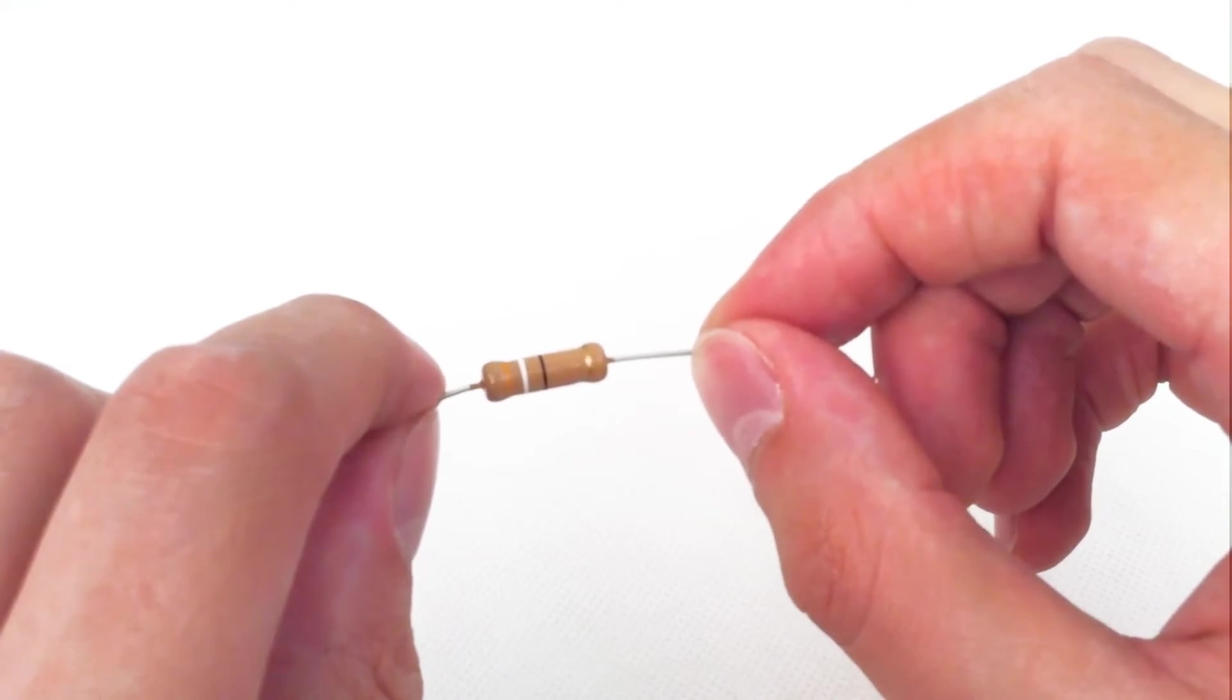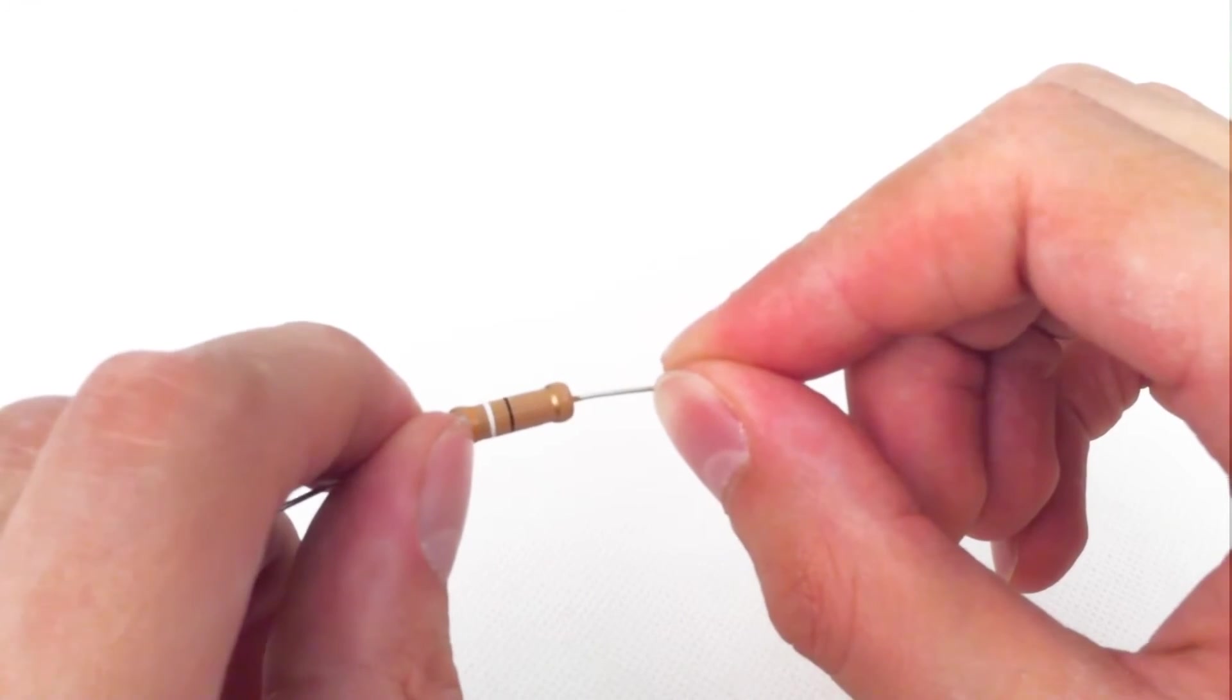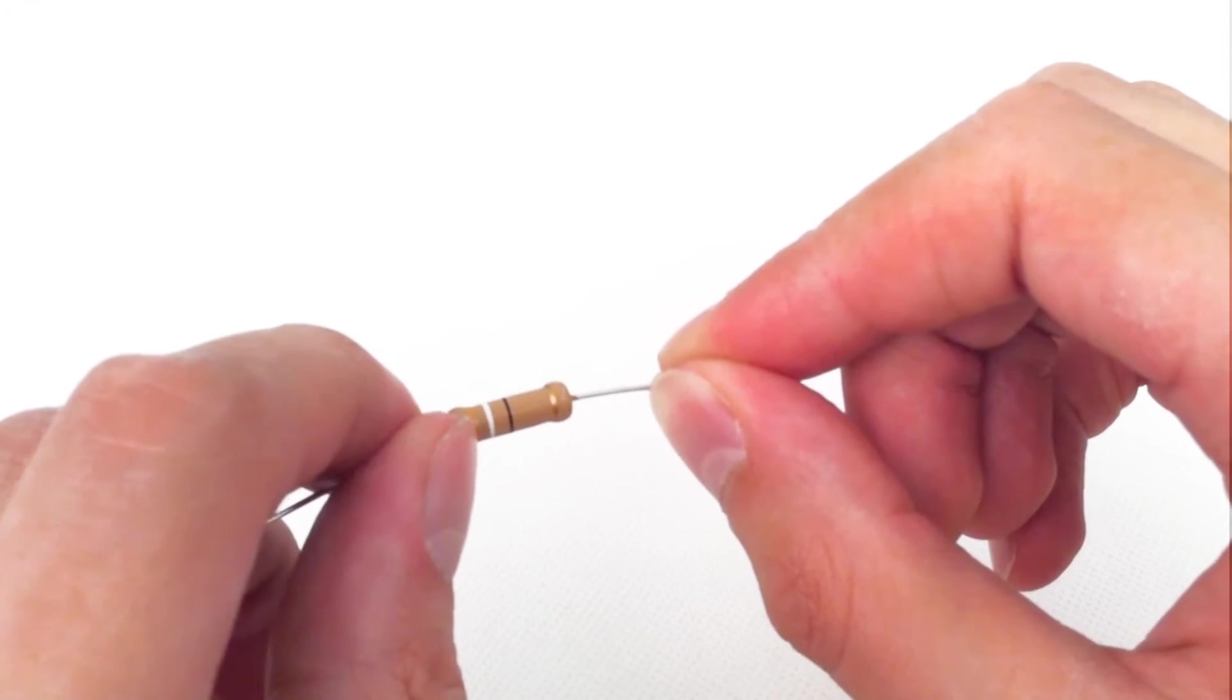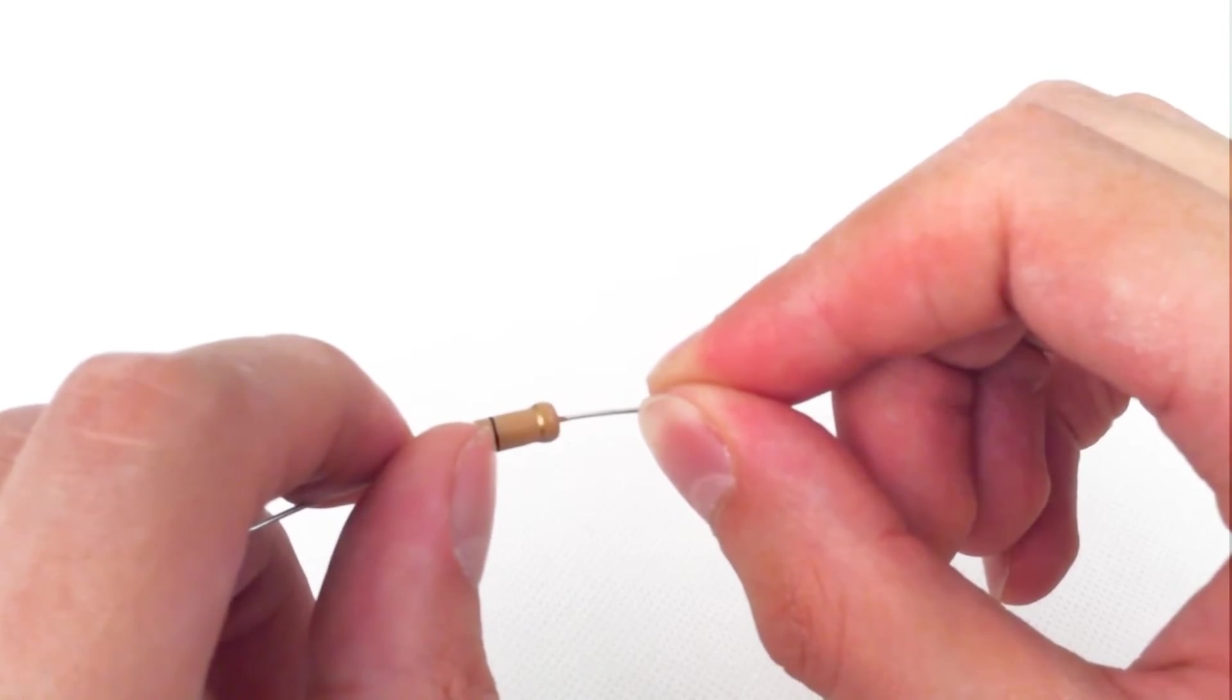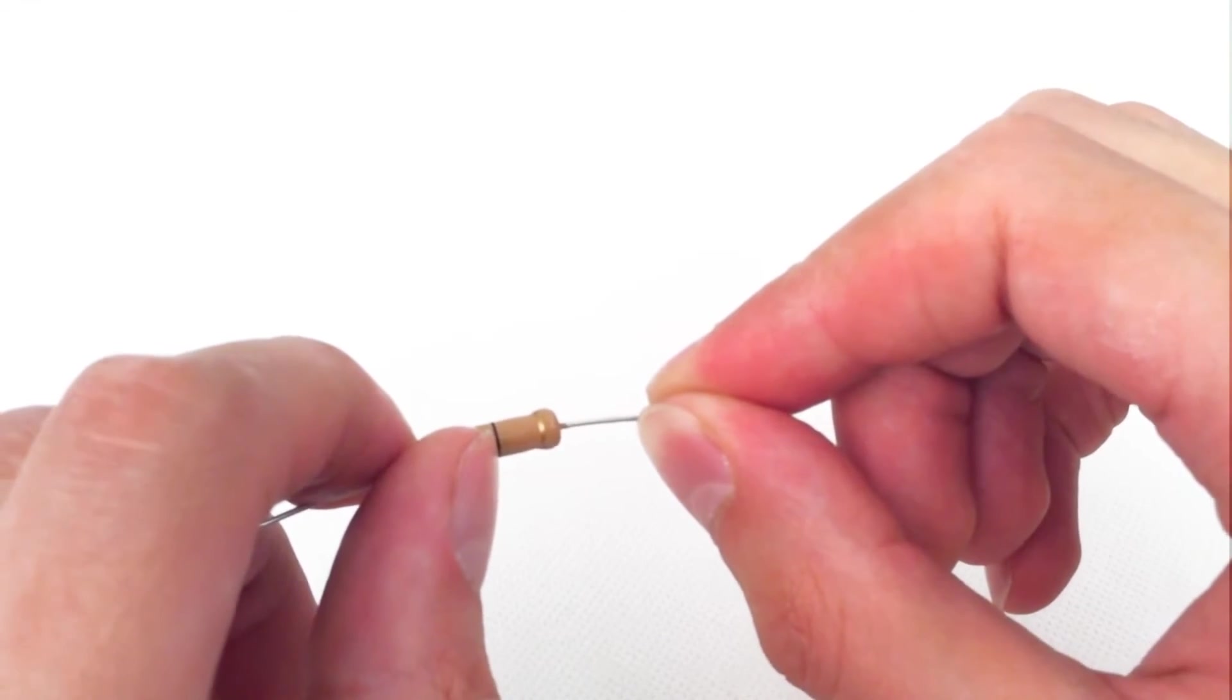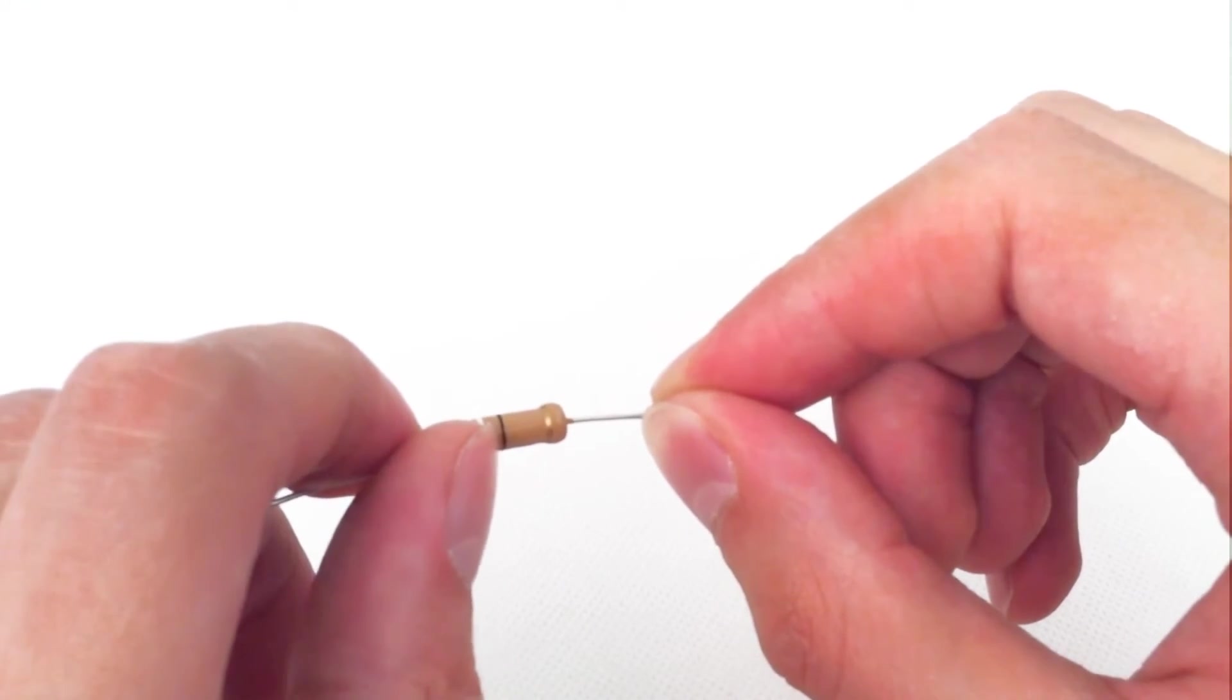The way the resistor color code works is that each stripe represents a number. The first stripe represents the first digit, the second stripe represents the second digit, the third stripe is known as the multiplier, and this represents the amount of zeros we have to add to the first two to give us the resistance value.